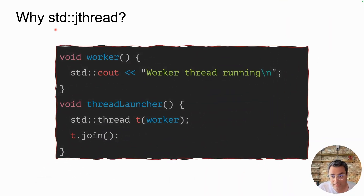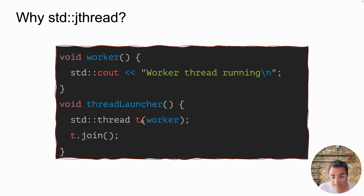Let's see what jthread is and what it provides. Here's a classic pattern of creating threads in C++. You have a launcher function and you use the std::thread constructor to pass a worker function to the thread. Once this thread is constructed, the worker function is running, and then you call t.join — the control gets blocked until the worker is done, and then you can exit.